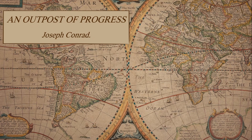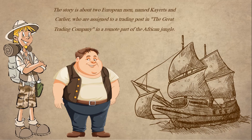Hello class, we are group number four and we are going to explain reading 'An Outpost of Progress' by Joseph Conrad. This story is a sample of European imperialism. The story is about two European men named Cajers and Carlier who are assigned to a trading post in the Great Trading Company, in a remote part of the African jungle.